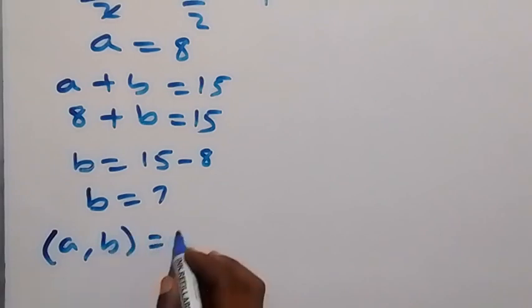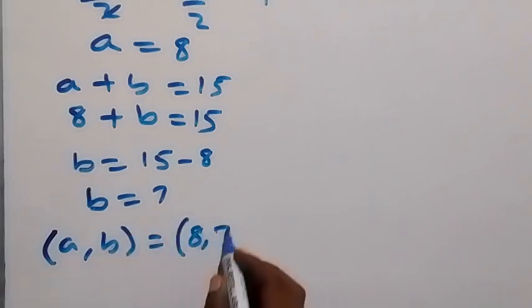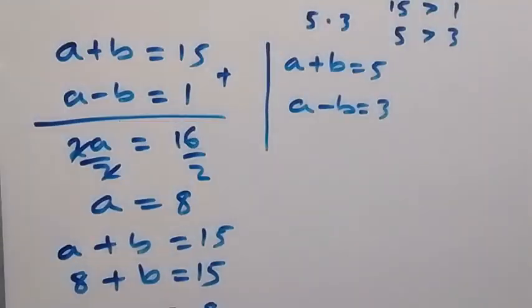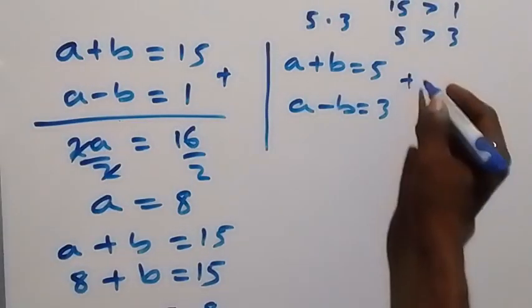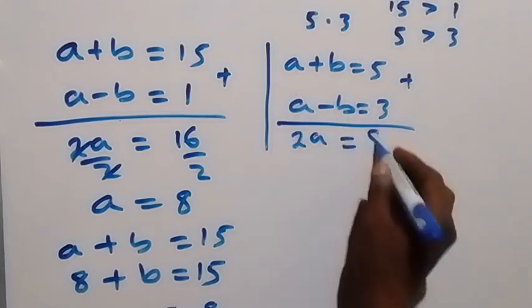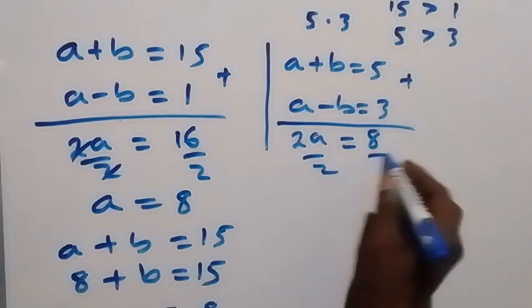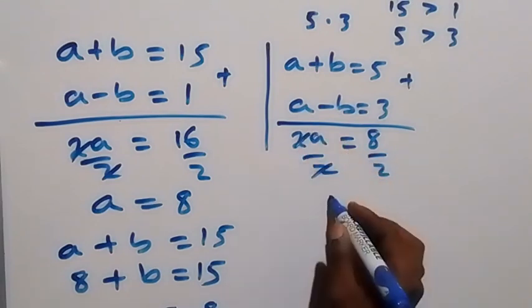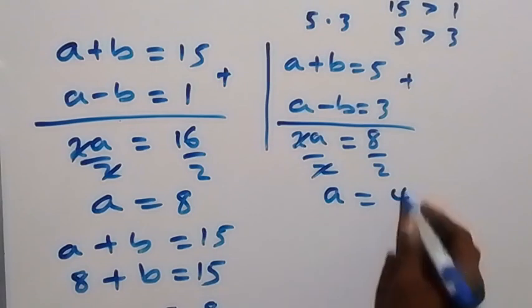For the second category, we also add these two equations and get 2a = 8. Dividing both sides by 2, we have a = 4.